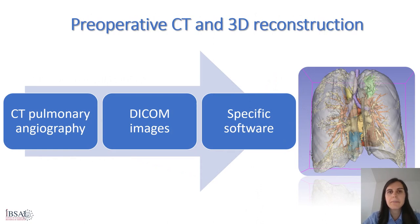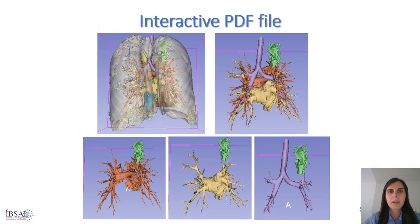3D reconstruction is based on CT pulmonary angiography images. Nowadays, most preoperative diagnostic evaluations of thoracic surgery candidates are performed using CT angiography, so that in general additional scanning is not necessary for preoperative planning. The DICOM images obtained in the CT study are then transferred to software and the 3D model of the chest structures is constructed either manually or automatically depending on the tool used. The 3D reconstructions can be transferred to an interactive PDF file in which all pulmonary structures can be individually selected, allowing the surgeon to review the vascularity and bronchial tree in 360 degrees.